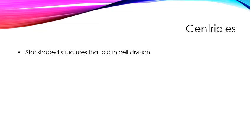And then we have the centrioles. These are two star-shaped structures that aid in cell division. They will actually create spindle fibers that help pull chromosomes apart. A lot of people have told me that they think they look like churros.